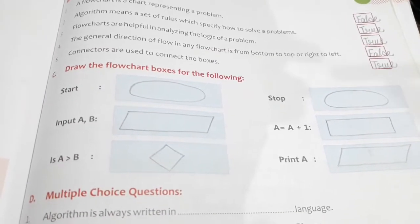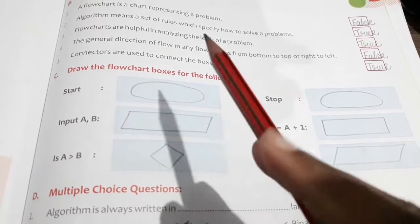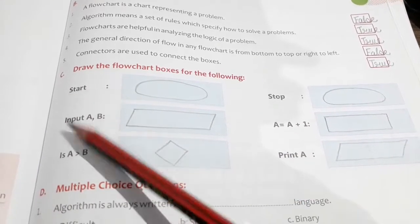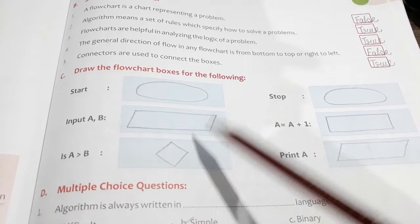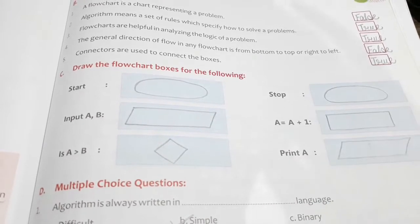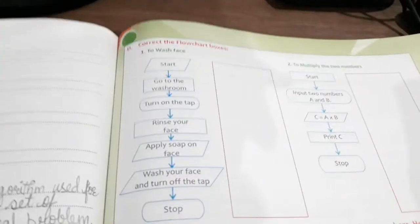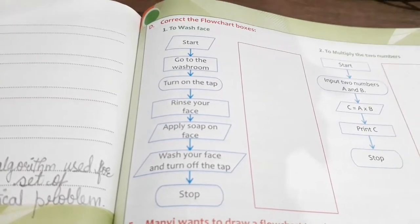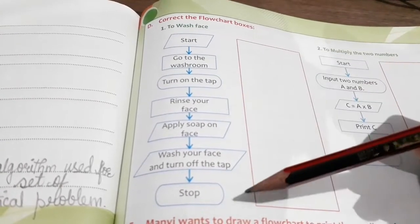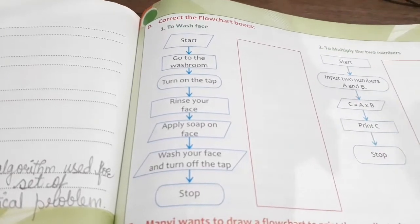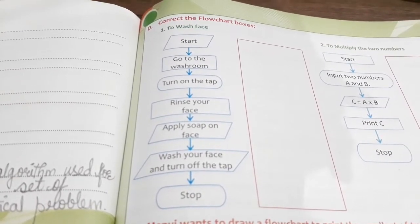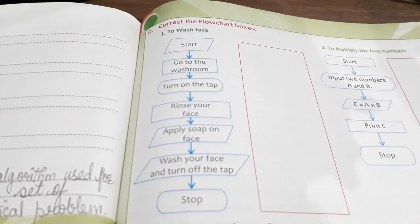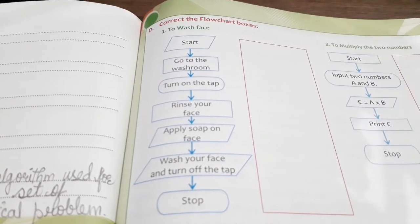Now, what diagrams can come in your exam? They may ask you to draw flowchart boxes for given names, or write an algorithm — for example, the steps to polish your shoes — and you have to make a flowchart for it. These are the diagrams that may come in your exam. If you have any doubts, please let me know. That's all for today; tomorrow we will revise lesson number 6. Thank you.